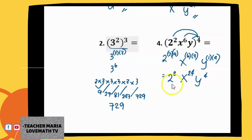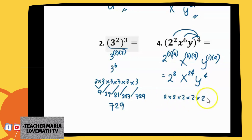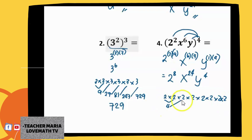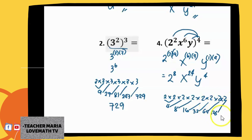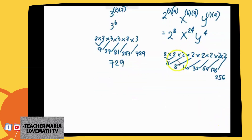Since we have 2 raised to 8, we still have to simplify this. We multiply 2 by itself 8 times: 2×2×2×2×2×2×2×2. Working through: 4, 8, 16, 32, 64, 128, 256. So the final answer is 256 x raised to 24 y raised to 4.